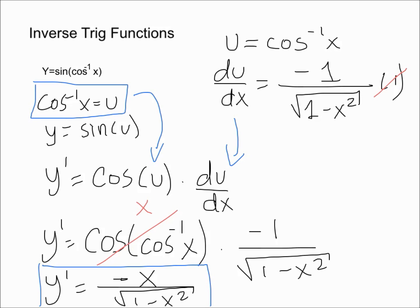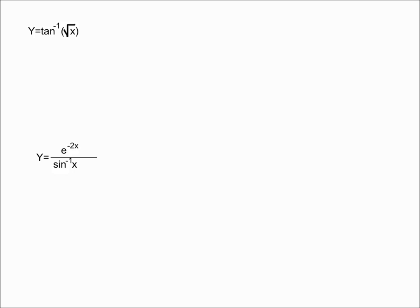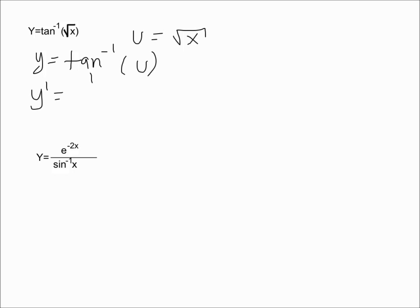Now let's solve another one. We have y is equal to the inverse tangent of the square root of x. We can solve this the same way we did the previous problem. We say that u is equal to the square root of x, so then y is equal to the inverse tangent of u, and y prime would be 1 over 1 plus u squared from the formula, times du/dx.